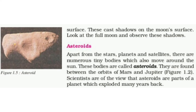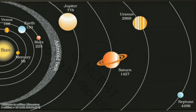Asteroids. Apart from the stars, planets, and satellites, there are numerous tiny bodies which also move around the sun. Stars, planets aur satellites ke alawa, bahut saare chhote chhote pind bhi sun ke charon aur chakkar lagate rehte hain. Inhe asteroids kaha jaata hai. Ye Mars aur Jupiter ki orbits ke beech paye jaate hain. Scientists ne asteroids ko planet ka hi part kaha hai, jo bahut varsh pehle visfot ke baad graho se toot kar alag ho gaye the.